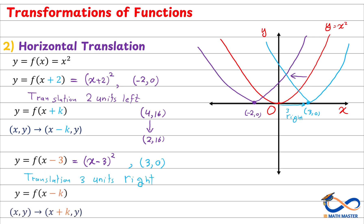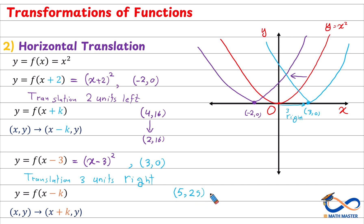Generally speaking, if you have y equals f of x minus k — if you subtract k from x — it will be a translation of k units to the right, and the point (x, y) will become (x + k, y). So we add k to move to the right. For example, if you have (5, 25) and move 3 units to the right, it becomes (5 + 3, 25) = (8, 25).